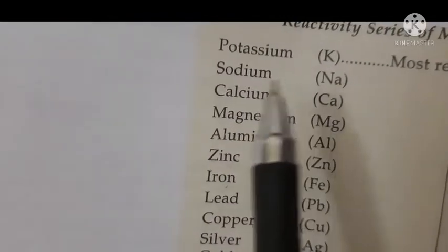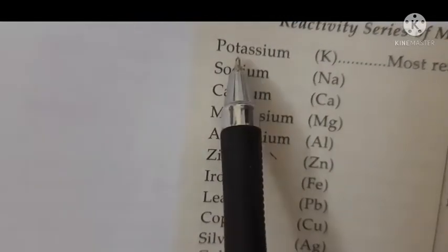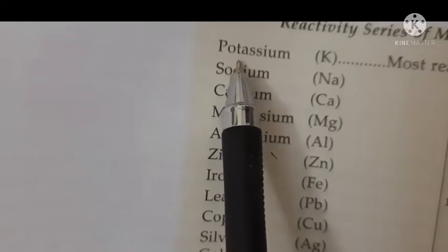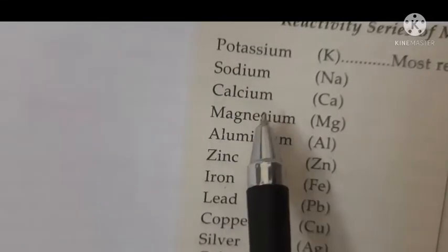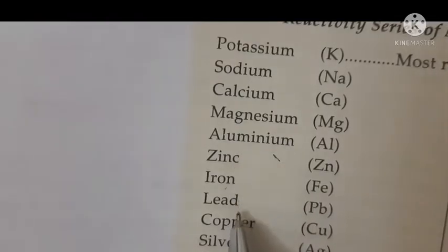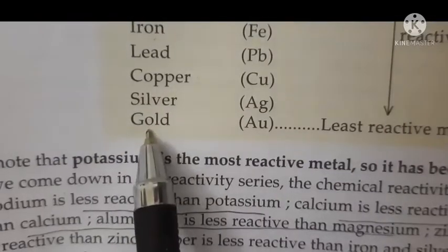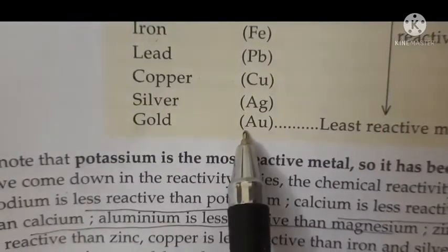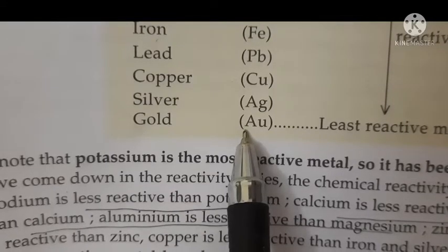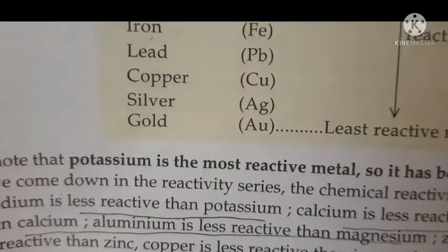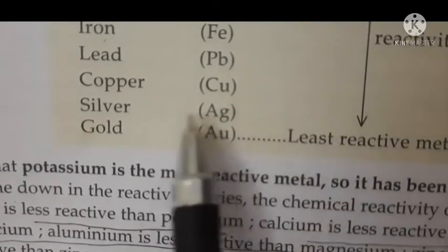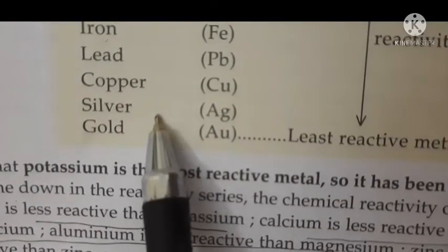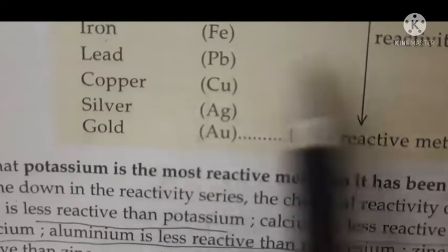Here you can see potassium is placed at the top of the reactivity series because it is highly reactive. After potassium: sodium, then calcium, magnesium, aluminium, zinc, iron, lead, copper, silver, and gold. Gold is placed at the bottom of the reactivity series, so gold is the least reactive metal. It does not react with oxygen or water, which is why gold ornaments are generally unreactive.